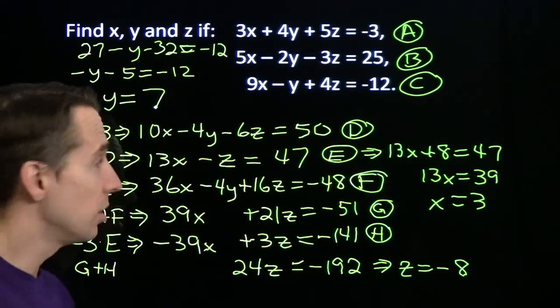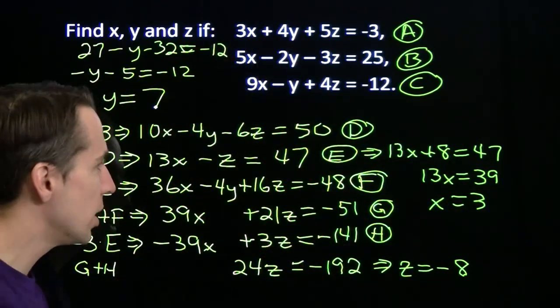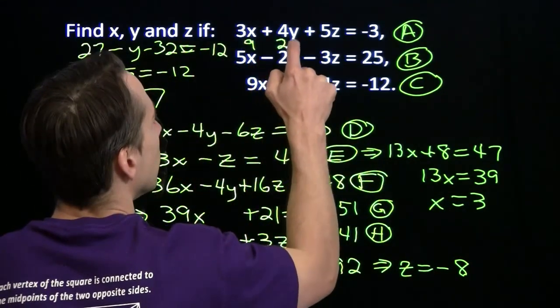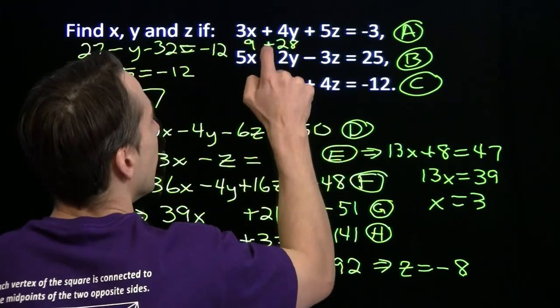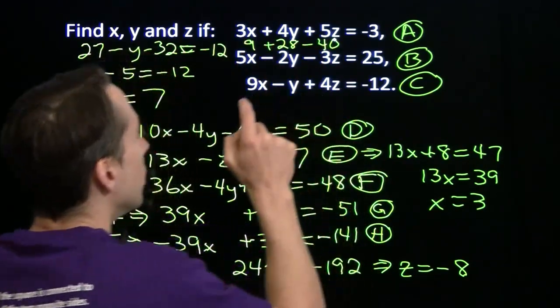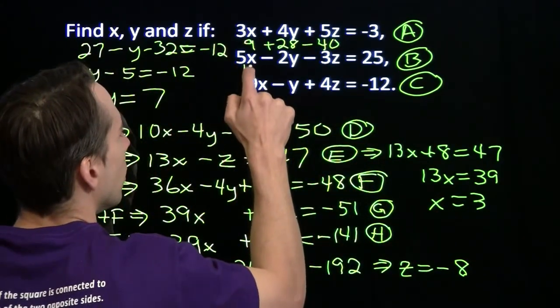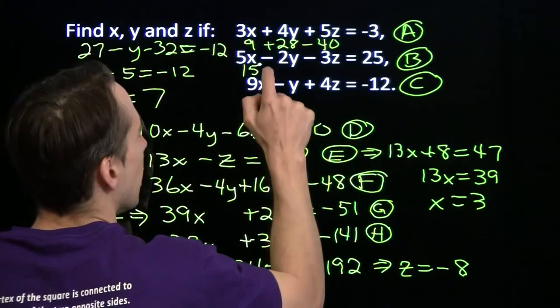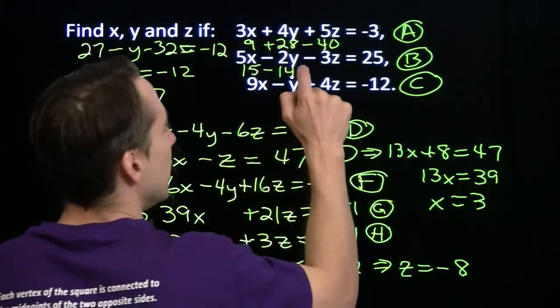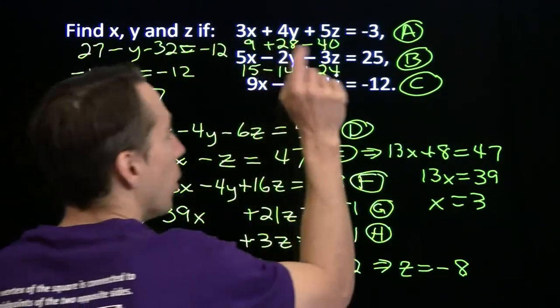Alright, let's check. There's a big complicated problem, we did a lot of algebra there. We can check this by substituting all 3 of these into each of these equations. 3 times 3 is 9, plus 4 times 7 is 28, and then 5 times minus 8 is minus 40. 9 plus 28 is 37, minus 40, that's negative 3. Try the next equation: 5 times 3 is 15, minus 2 times 7 is minus 14. Minus 3 times minus 8 is plus 24. 15 minus 14 is 1, 1 plus 24 is 25.